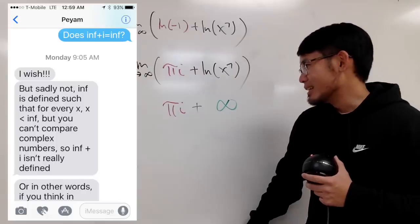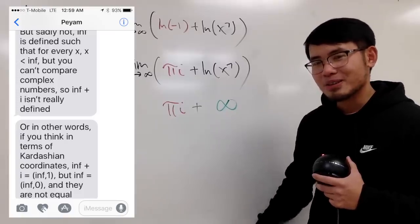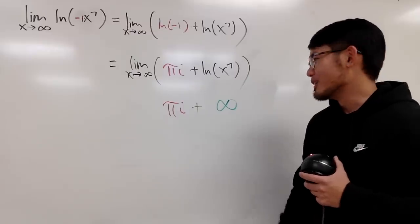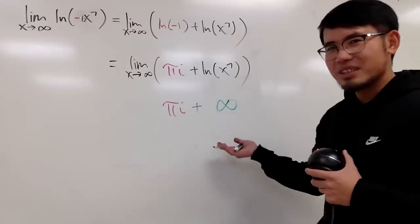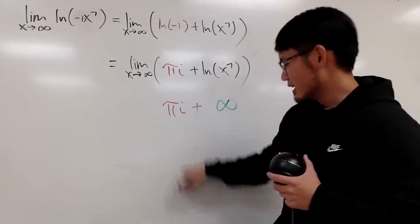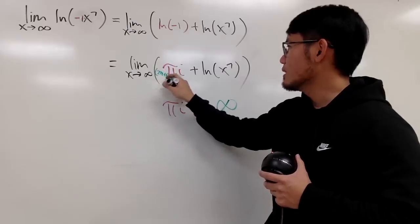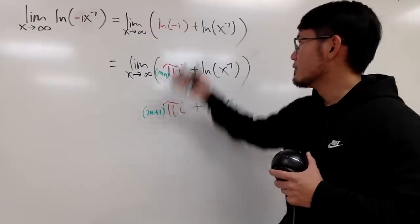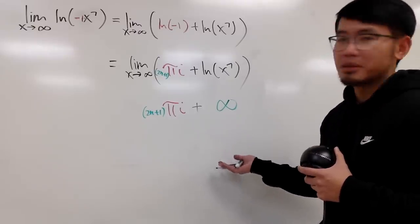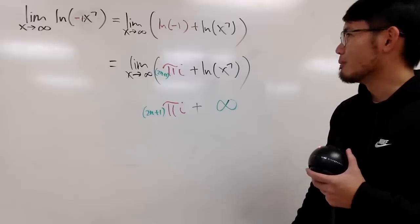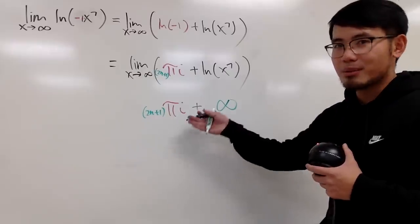Dr. Payan verifies this with me — you can see this right here. So I'd rather believe Dr. Payan than Wolfram Alpha. Perhaps the answer is πi plus infinity, or technically since you have the odd multiples, you'd write it as (2n+1)πi plus infinity. I'm not even going to box the answer here because I don't know. The key point is: you just cannot combine i with infinity.